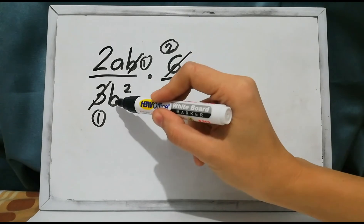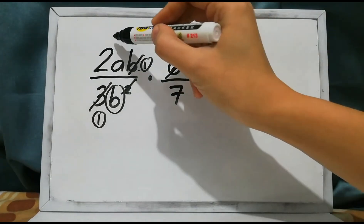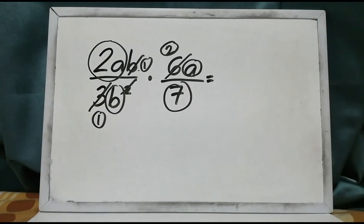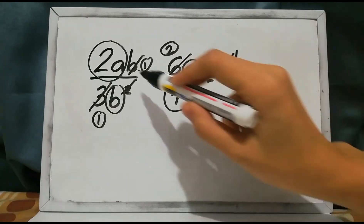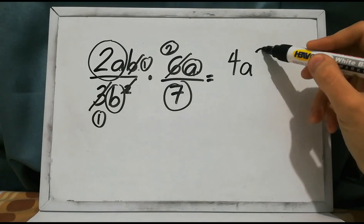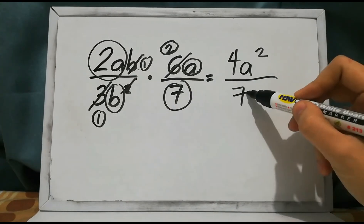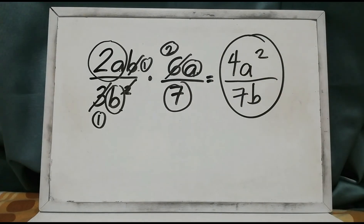b divided by b is 1, and b squared divided by b is b. So we have 2a, a, and 7 remaining. Multiplying: 2 times 2 is 4, and 4 times a squared over 1 times 7 gives 7b. The product is 4a squared over 7b.